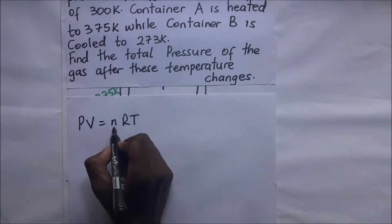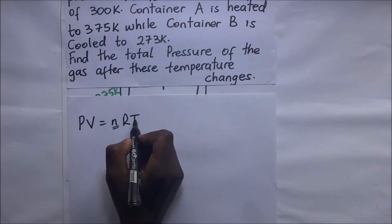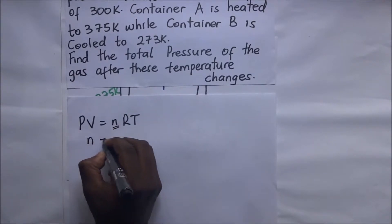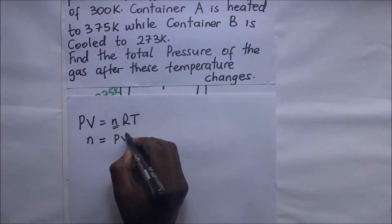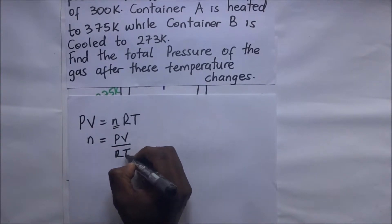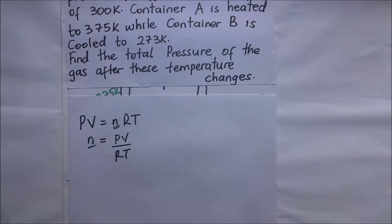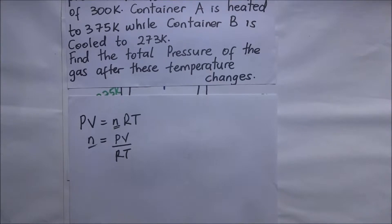In PV = nRT, n is the number of moles, R is the gas constant, T is temperature, and P and V are pressure and volume. Rearranging for n gives n = PV / RT. The amount of gas in the containers remains the same regardless of heat added or removed.